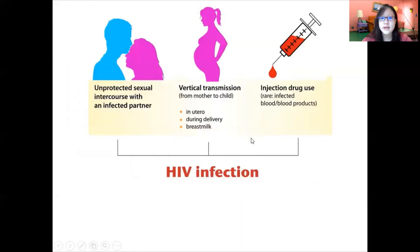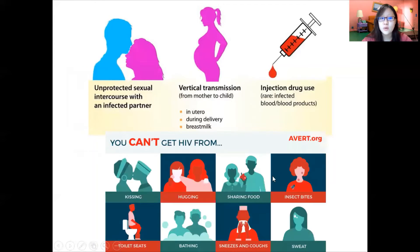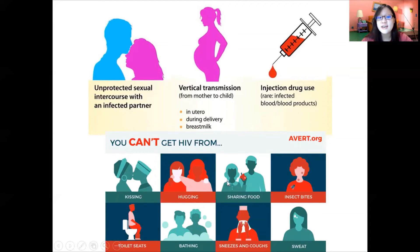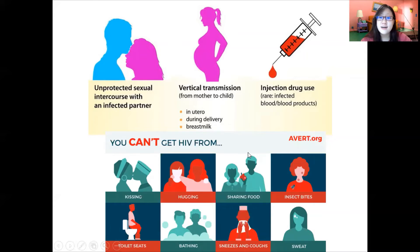Here is how HIV cannot spread: it cannot spread through kissing, hugging, sharing food, insect bites, bathing, toilet seats, sneezes, coughs, or sweating. So if you meet someone who is HIV positive, do not discriminate against them — essentially, just stay away from their blood.